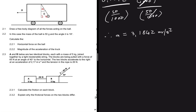Question 2.3: blocks A and B are two identical blocks each with a mass of 5 kg, joined together by a light inextensible string. They are being pulled with a force of 65 newtons at an angle of 40 degrees to the horizontal. The two blocks accelerate to the right at 2.17 m/s². The tension in the rope is 26 newtons. Question 2.3.1 asks us to calculate the friction on each block.